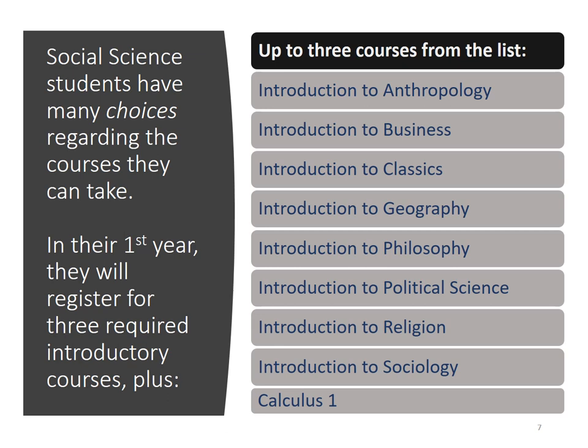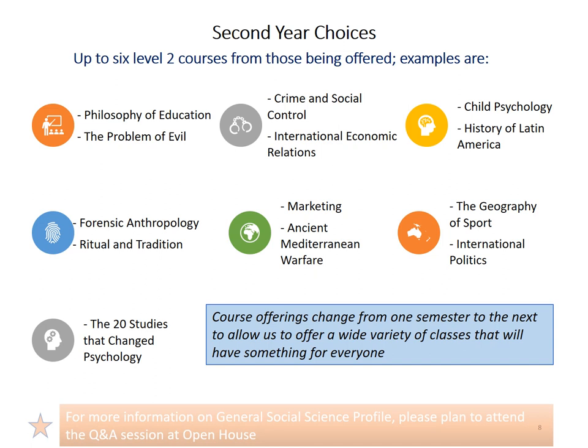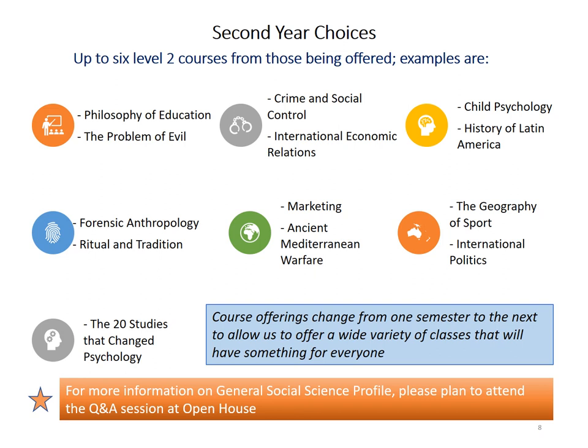On top of those mandatory courses, year one students take three additional courses selected from nine different social science disciplines shown on the slide. As they progress in the program, students have access to a wide choice of courses in various social science disciplines such as philosophy, anthropology, business administration, sociology, political science, geography, and religion.